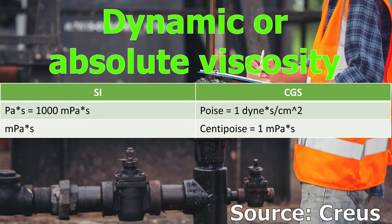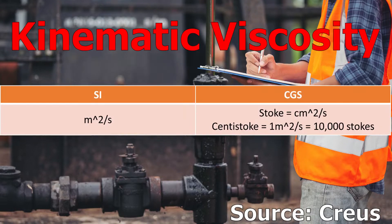There are different terms related to viscosity. The first is dynamic or absolute viscosity, defined by the Hagen-Poiseuille formula, whose unit in the international system is the pascal per second or the millipascal per second. This unit has replaced the poise and centipoise from the CGS system.